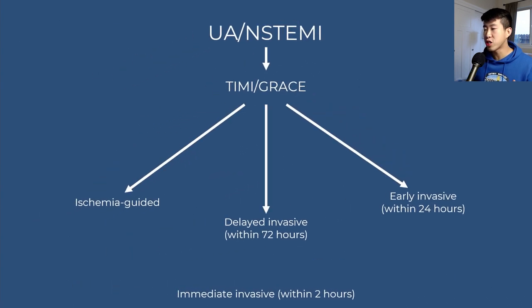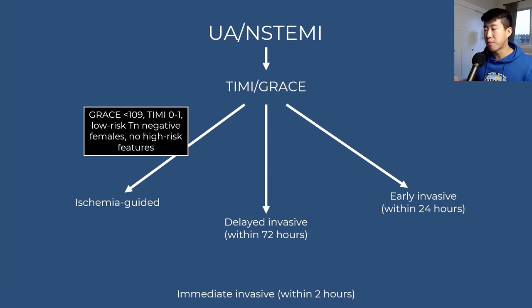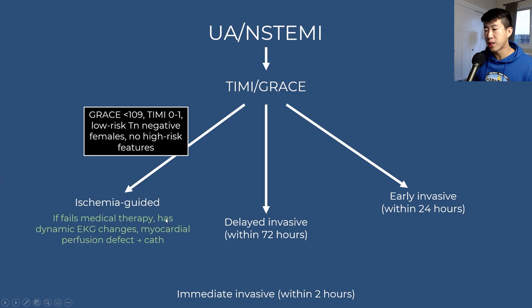For ischemia-guided management, candidates are very low-risk patients: GRACE score less than 109, TIMI score 0-1, or low-risk troponin-negative females without high-risk features. Place them on dual antiplatelet therapy, medically manage them, and consider stress testing for perfusion defects. If they fail medical therapy, have dynamic EKG changes, or perfusion defects on stress testing, proceed to cardiac catheterization.